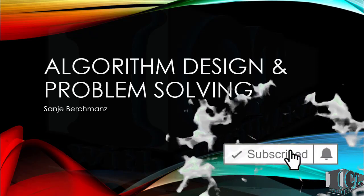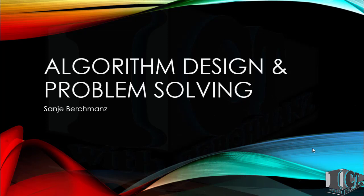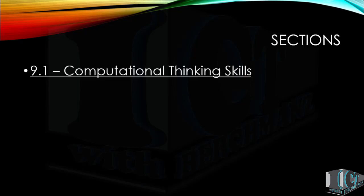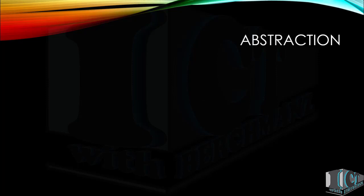Good day to all, this is Sanjay sir and today we are going to discuss the ninth unit of Cambridge AS Level — Algorithm Design and Problem Solving. In this unit it will be divided into two sections: first, computational thinking skills, and second, 9.2 algorithms. In today's video we will be discussing computational thinking skills.